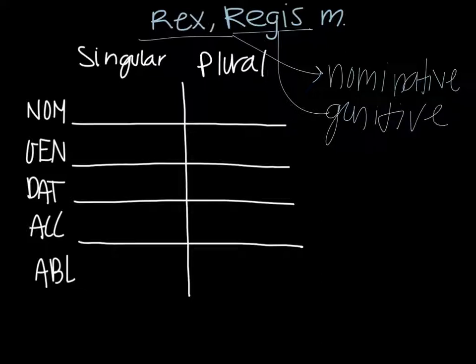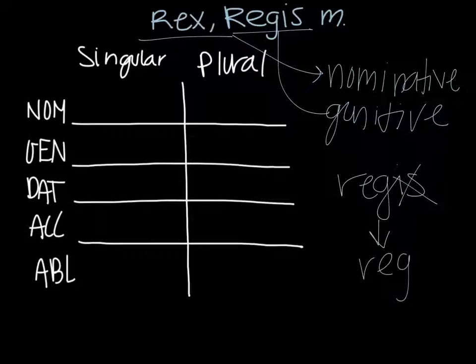For now we're just going to focus on regis because that's what we're going to use to get our genitive stem. The genitive stem is basically what we're going to use to plug all our endings onto when we decline this word. So to get the genitive stem we're going to take regis which is the genitive and we're going to remove the is. So we just get reg and that would be our genitive stem.